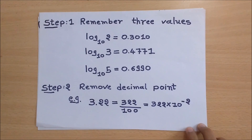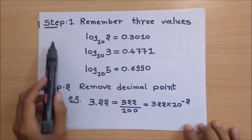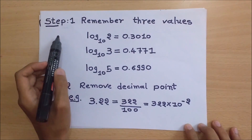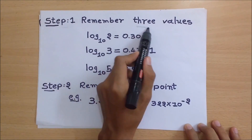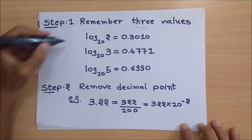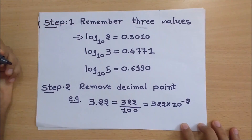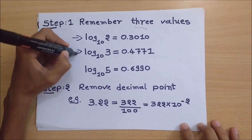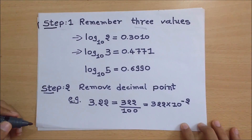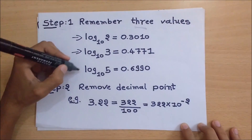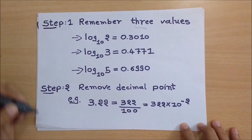Hello, this is Priyank. Let me tell you how you can find the logarithm of a number without a log table or calculator. For this trick you have to remember 3 log values: log of 2 is equal to 0.301, log of 3 is equal to 0.4771, and log of 5 is equal to 0.699.